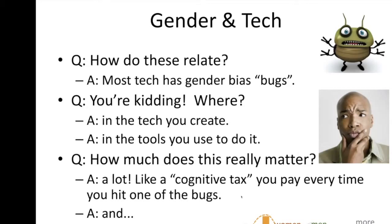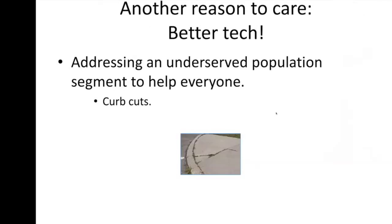Every time somebody stumbles into one of these bugs, they pay a cognitive tax every single time — the software, the technology is just sapping their strength. But even if you don't care about that, there's another reason why you would care about this: if you take down those inclusivity bugs, what you end up with is better technology, just flat out better. The design community is already familiar with this principle — when you address an underserved population segment in any product you're building, you tend to make things better for everyone.